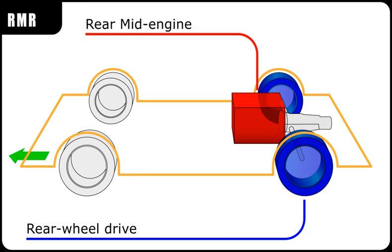This was followed by the first De Tomaso, the Vallelunga, which mated a tuned Ford Cortina 1500 Kent engine to a VW transaxle with Hewland gearsets. Introduced at Turin in 1963, 58 were built 1964-68.